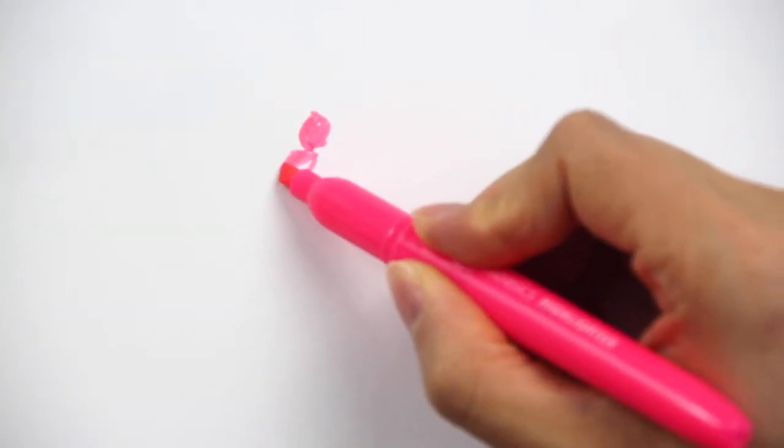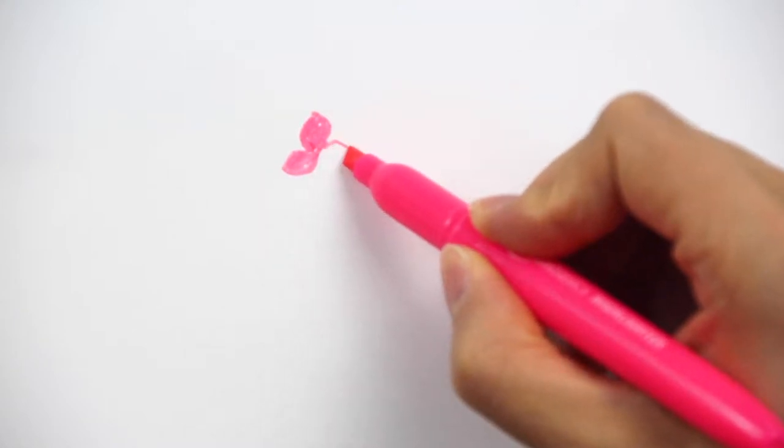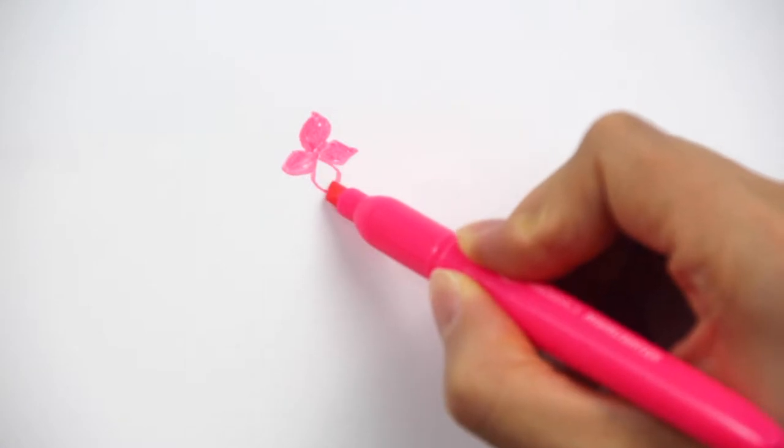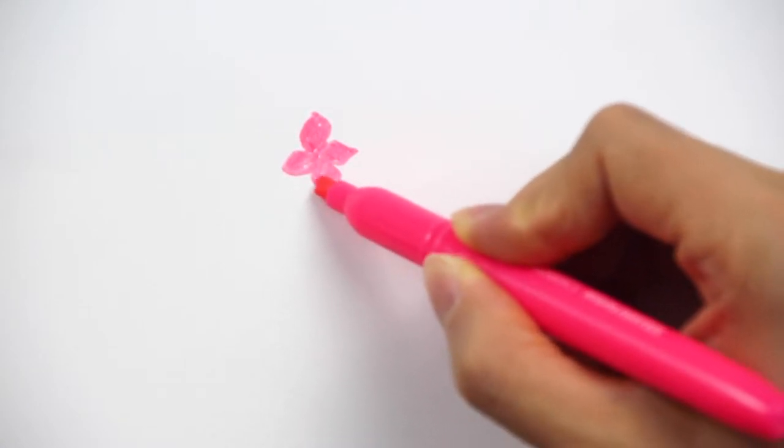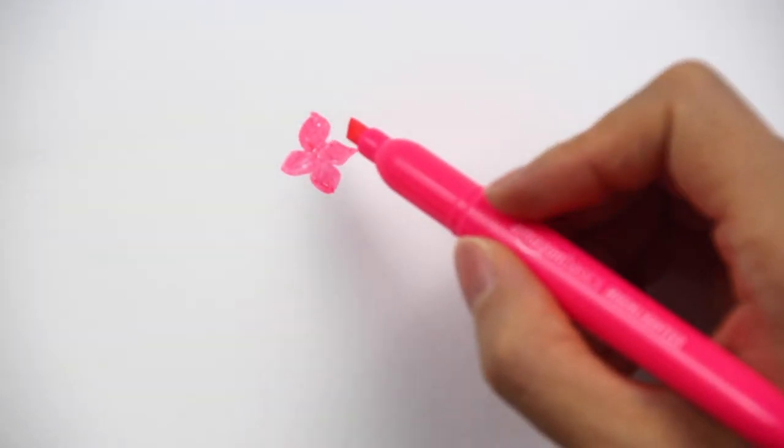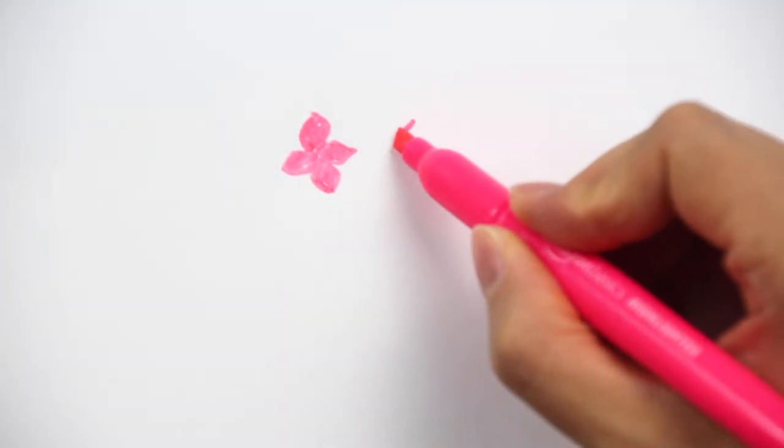Let's do another one. They actually come together to form almost like a cross-looking shape like this. So this is one piece of the small flower that makes up a big one.